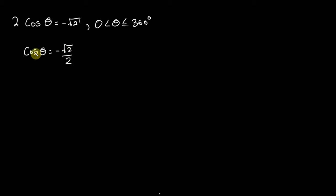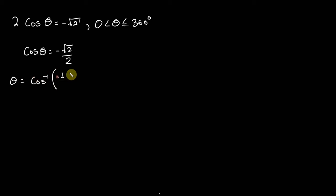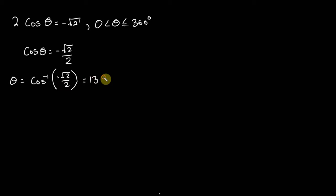Now we want to take the inverse to find theta. So we get theta equals the inverse cos of negative root 2 over 2. If you input that into your calculator, you're going to get 135 degrees. So that's our first solution.